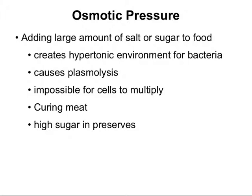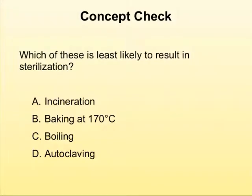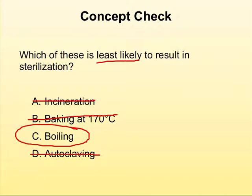That brings us to the end of the section on physical agents of microbial control. Let's have a quick concept check before we move on to look at chemical agents. Which of these is least likely to result in sterilization: incineration, baking at 170 degrees C, boiling, or autoclaving? We know that incineration basically vaporizes the cell and forms ash, so we'll take that off the list. We also know that autoclaving is very effective at killing most everything. Baking at 170 degrees C should take care of it. But boiling is only at 100 degrees C and it does not kill the spores. So boiling is the correct answer.